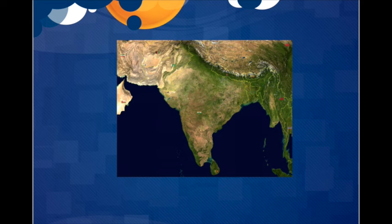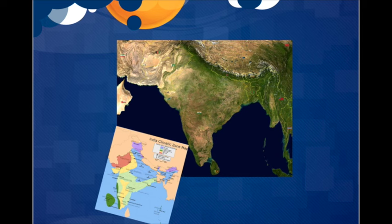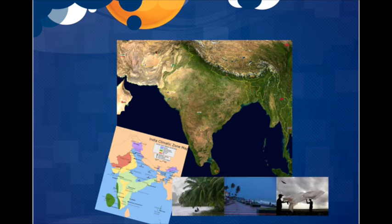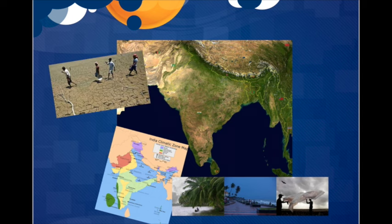In South India, the climate is tropical, wet, and dry, with it being wet during the monsoon season in the middle of the year and dry the rest of the time. In North India, the climate is more arid, humid, and dry, with it raining less, and also relatively mountainous in some regions.